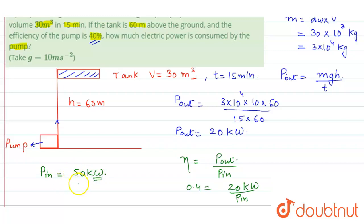So the pump is taking in 50 kilowatts and it is delivering a power of 20 kilowatts. So where is the remaining 30 kilowatt going? It is simply wasted in the form of heat. So 30 kilowatt power or 30 kilojoule of energy is wasted per second by this pump in the form of heat. So this will be the power consumed by the pump.